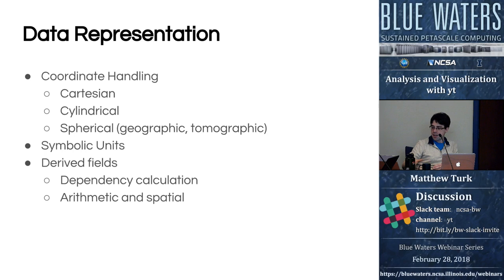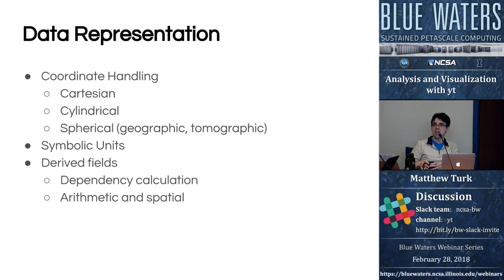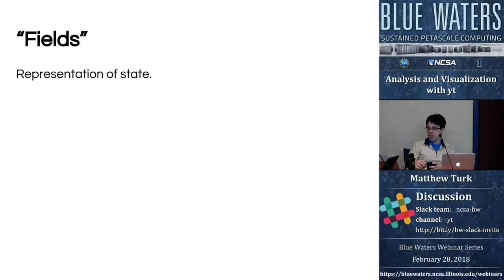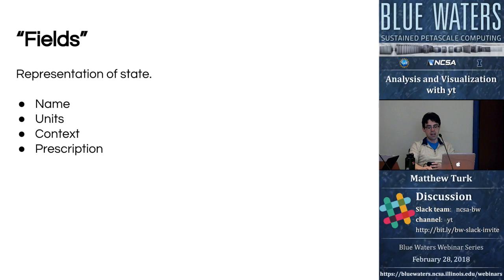We also have the ability to generate derived fields, which, based on the data-parallel nature of the low-level operations, allows us to generate derived fields only as necessary. This can include automatic calculation of dependencies and batching of IO transparently, as well as arithmetic and spatial operators. We think about fields in YT as being representations of state — when evaluating a field, it has typically a name, some type of unit or dimensionality, a context in which it is meaningful, and a prescription for generating it.